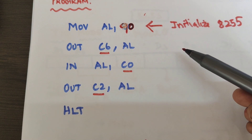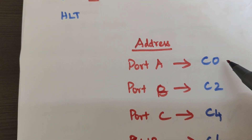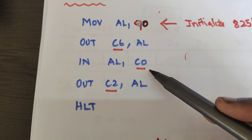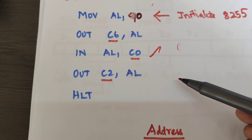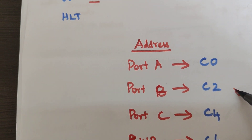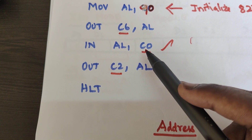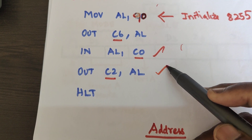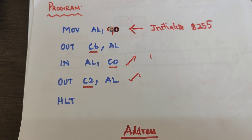After initializing the 8255, load the input from port A using: IN AL, C0. Port A address is C0H, so the value moves into the accumulator. Then send that input to port B for output using: OUT C2, AL. Port A acts as input using the IN instruction, and port B acts as output using the OUT instruction. Finally, halt the program with HLT. Now we will execute these instructions on the 8086 microprocessor kit.